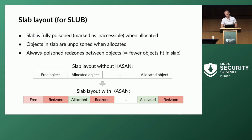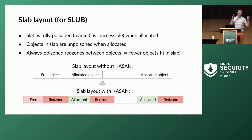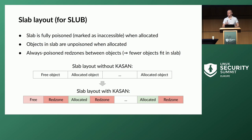KASAN also adds red zones between each two objects, and the red zones always stay poisoned. The red zones allow KASAN to detect buffer overflows — without them, an overflow from one object into another would not be detected because both are marked with zero in shadow memory. And whenever an object is freed, it gets poisoned because the kernel should not be accessing it.